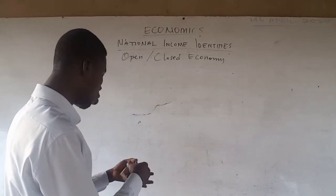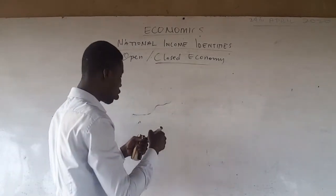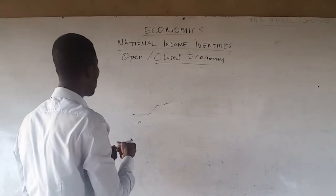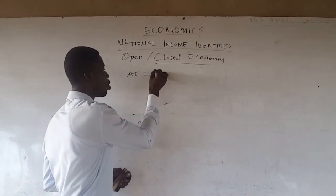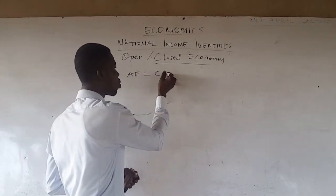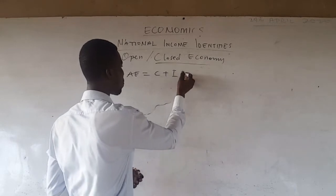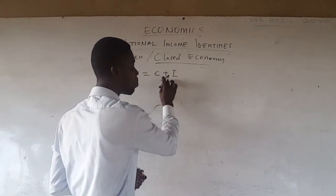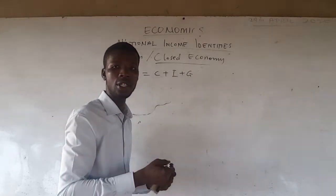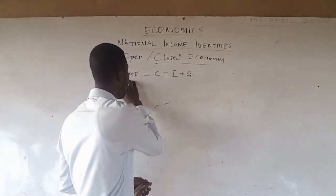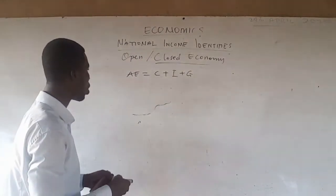So we are dealing with the closed economy first. With a closed economy, we know that our aggregate expenditure equals consumption plus investment plus government expenditure. This is our aggregate expenditure.